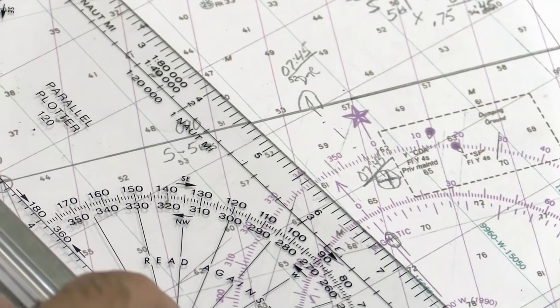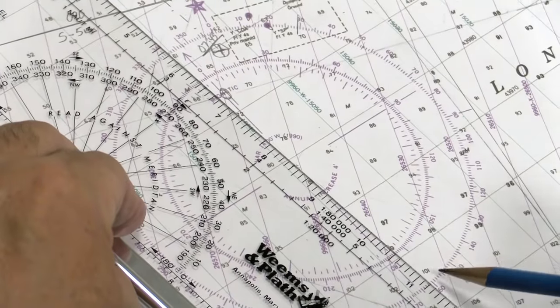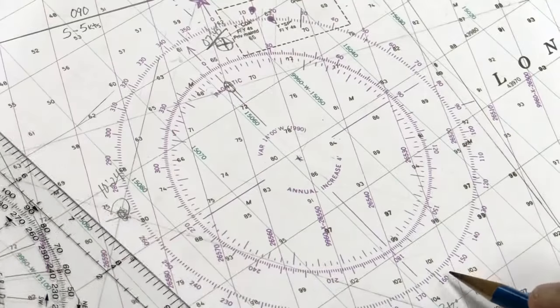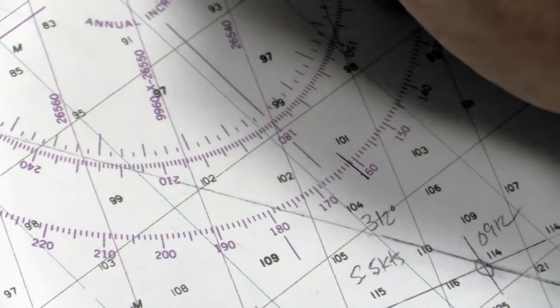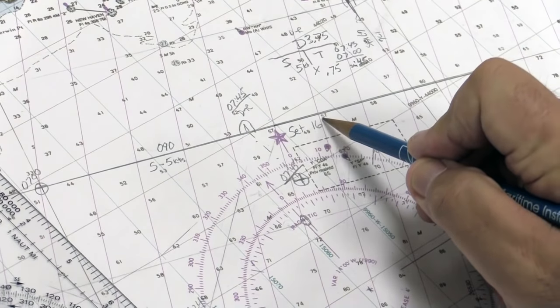We bring that down to the center of the compass rose. We were set in this direction, so we were set at this number of degrees. In this case, 161 degrees. So our set is 161 degrees.